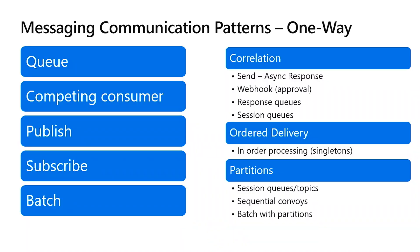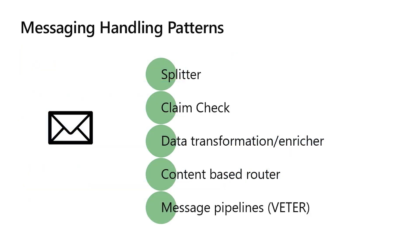For one-way messages, we have queues, competing consumer, pub-sub, and batch. For message handling patterns, we have the splitter pattern — a split-on property on your trigger looks at a collection in the incoming message and creates multiple Logic App instances based on that property path. You can also do your own split with a for-each loop.